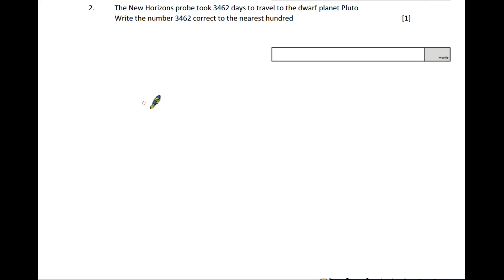Question two: The New Horizons probe took 3,462 days to travel to Pluto. Write that to the nearest hundred. The hundred column is your four, the number we're interested in is six. Because it's five or above, it rounds up to 3,500.